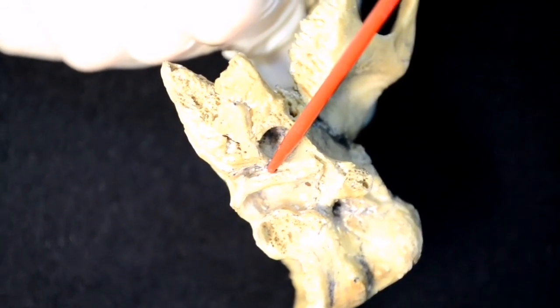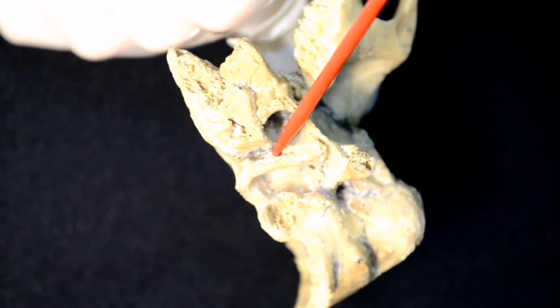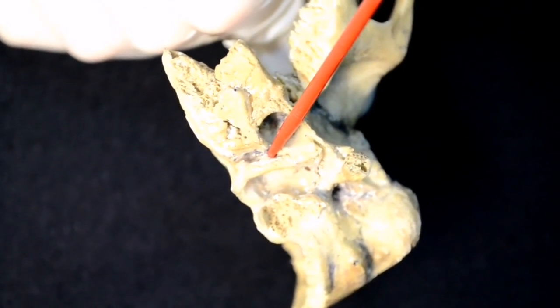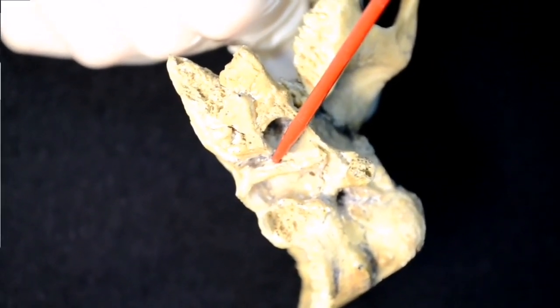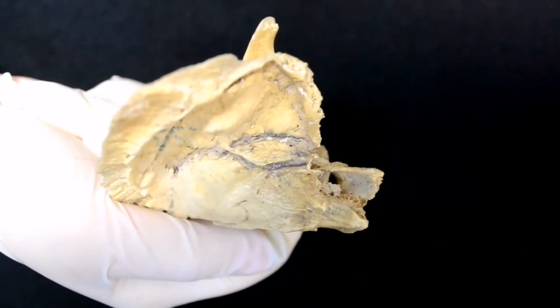Canaliculus tympanicus originates from the depth of fissura petrosa. It goes to the lower wall of the tympanic cavity, pierces it, and turns superiorly.